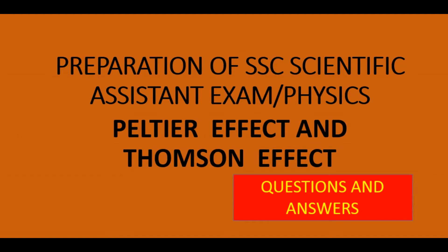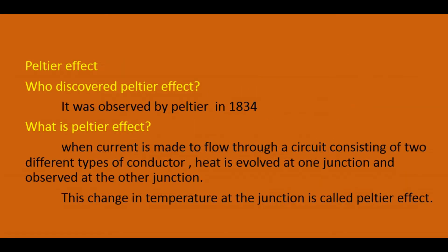Hi friends, in this video we see about the Peltier effect and Thomson effect. First we see about the Peltier effect. Who discovered the Peltier effect? It was observed by Peltier in 1834. When current is made to flow through a circuit consisting of two different types of conductors, heat is evolved at one junction and absorbed at the other junction. The circuit consists of dissimilar metals — that is called the thermocouple. This changing temperature at the junction is called the Peltier effect.